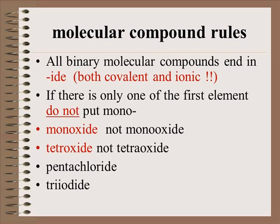Again, remember, all binary molecular compounds end in ide, both covalent and ionic. If there's only one of the first element, you do not put mono. So you're going to say monoxide, not monooxide if you're bringing two vowels together, or tetroxide instead of tetraoxide. But it still remains pentachloride and triiodide. So all the rules are not followed. In reality, the endings are taken off if they think it sounds better.